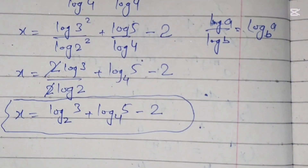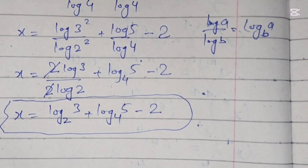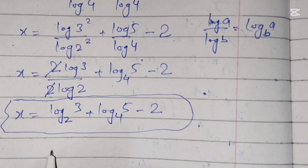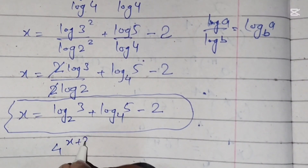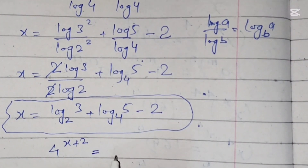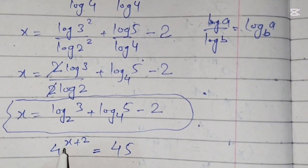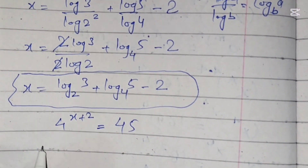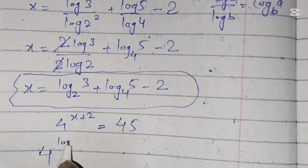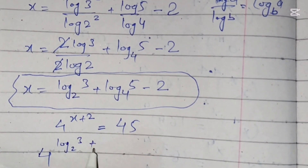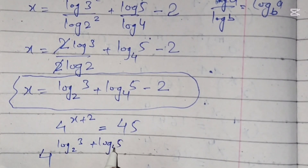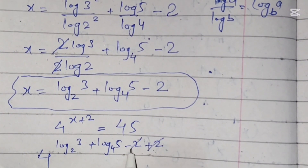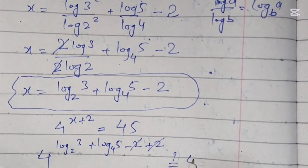Now we will substitute this value of x back into the original equation to verify whether it is correct. The question is 4 power x plus 2 equals 45. We put the value of x: log base 2 of 3 plus log base 4 of 5 minus 2, plus 2. The minus 2 and plus 2 cancel, leaving 4 raised to the power log base 2 of 3 plus log base 4 of 5, equals 45.